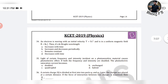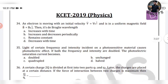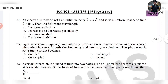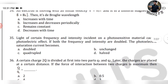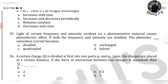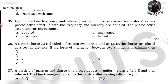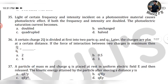34th question: An electron is moving with an initial velocity V vector equal to V0 i in a uniform magnetic field B vector equal to B0 j. Due to the De Broglie wavelength — it remains constant. That is the 34th question answer: it remains constant.